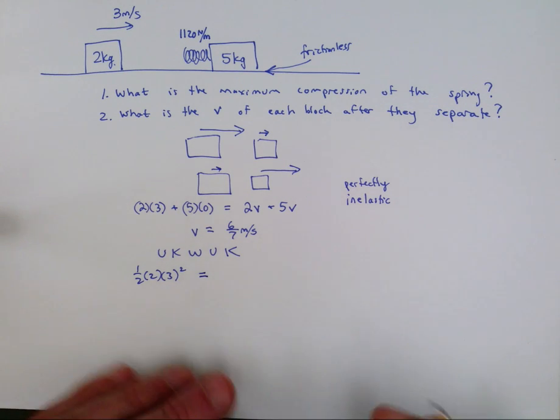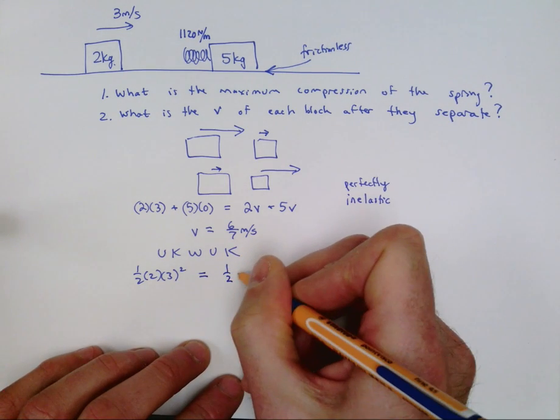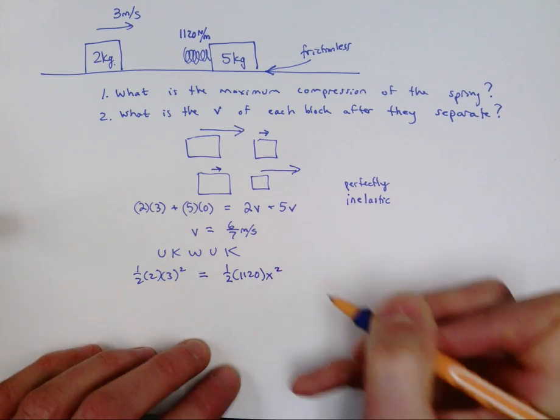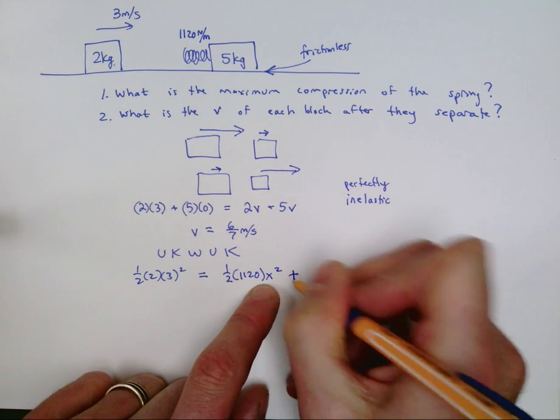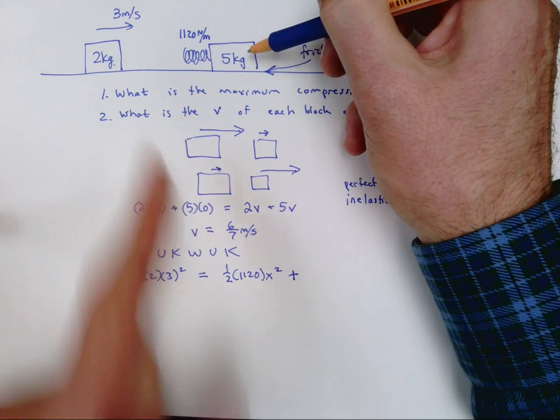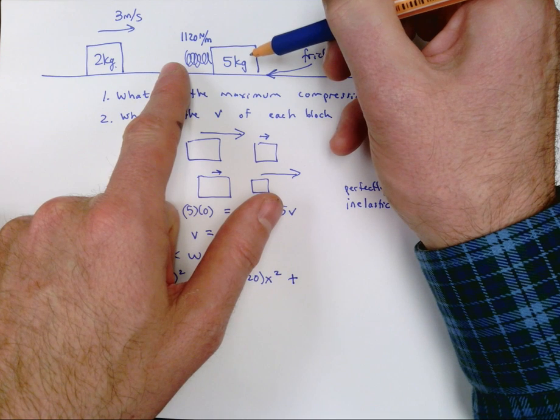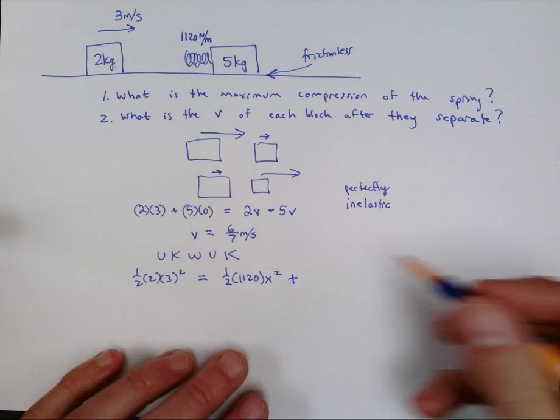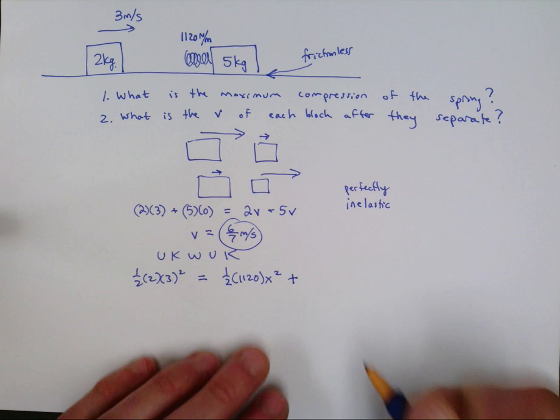At the moment of maximum compression, certainly there's elastic potential energy. So that's one half kx squared, and x is what we're looking for. But don't forget that this thing doesn't just sit here at rest. Since it's frictionless, the moment this one starts to touch it, they both start to move. So there's kinetic energy at this moment, and they're moving this fast. That's why we calculated that number.